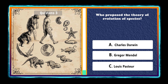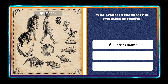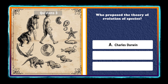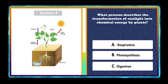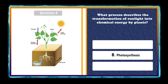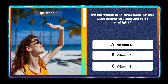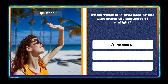Who proposed the theory of evolution of species? Charles Darwin. What process describes the transformation of sunlight into chemical energy by plants? Photosynthesis. Which vitamin is produced by the skin under the influence of sunlight? Vitamin D.